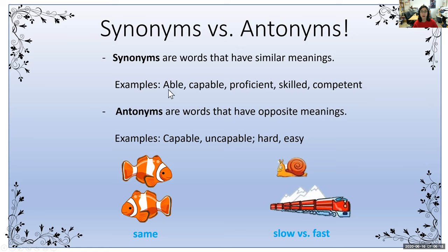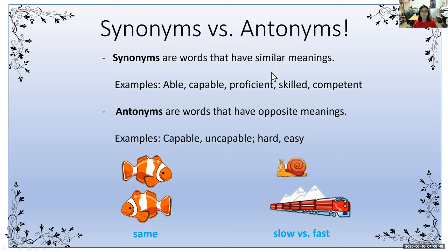So if I was to say I am able, I am capable, I am proficient, I am skilled, I am competent — those all have that same meaning. Versus antonyms, which are words that have opposite meanings. For example, capable and incapable are antonyms. Or hard and easy are also a pair of antonyms. Or slow and fast — they have opposite meanings. So synonym means similar, antonyms means opposite.